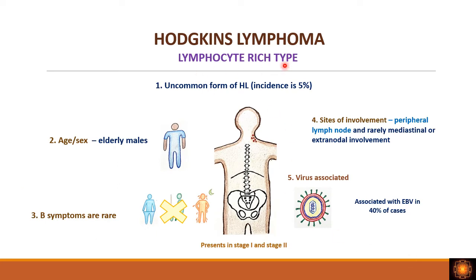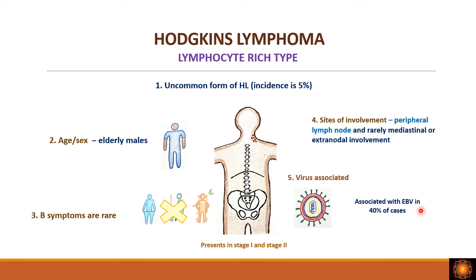The lymphocyte rich type is uncommon, comprising about five percent of cases. It occurs in elderly males with male predominance. B symptoms are very rare in this type. Patients usually present at stage 1 or stage 2 with peripheral — typically cervical — lymph node involvement. Mediastinal involvement is very rare. The virus associated with this type is also EBV, similar to lymphocyte depleted — both names contain 'lymphocyte' and both are associated with Epstein-Barr virus.